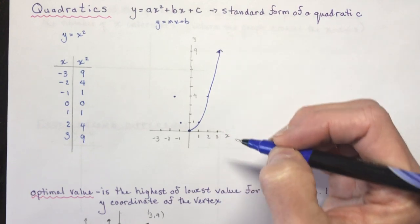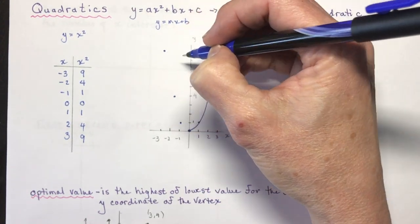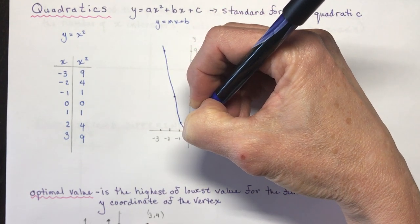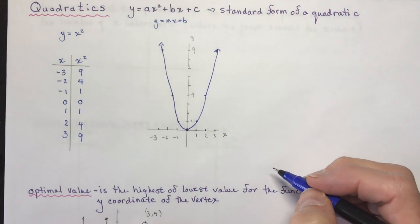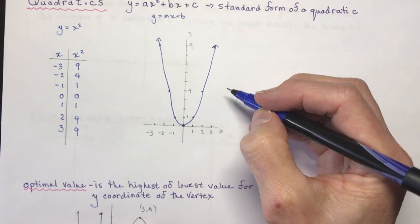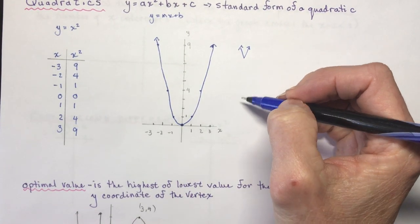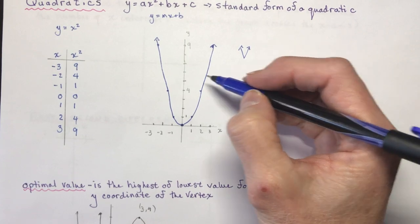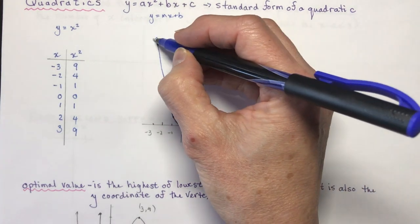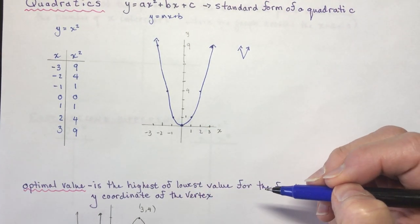You need both sides of the parabola to see its shape — if you only graphed one side, it wouldn't look parabolic at all. The graph has a curved bottom, not a pointy one. A pointy graph is actually an absolute value function. Make sure to put arrows on the ends to indicate the graph continues beyond the points from minus 3 to positive 3.